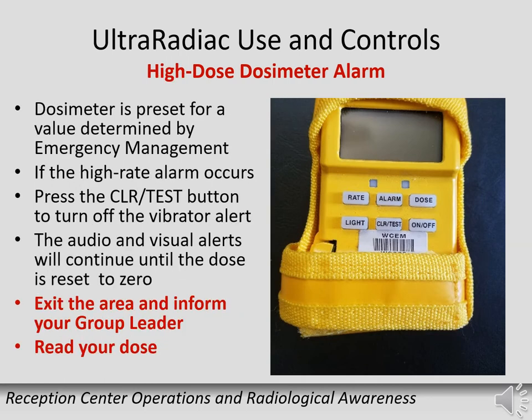The dose alarm also has a high dose alarm setting. If the dosimeter reaches this value, the unit will alarm with vibration, visual, and audible alerts. Press the clear test button to reset the vibration alert; the visual and audible alerts will remain until the dose is reset to zero. If the high dose alarm occurs, exit the area, inform your group leader, and read your dosimeter.